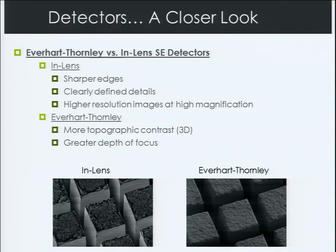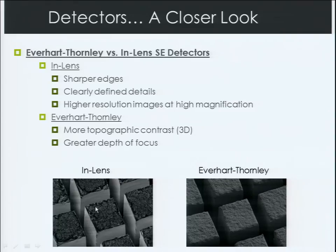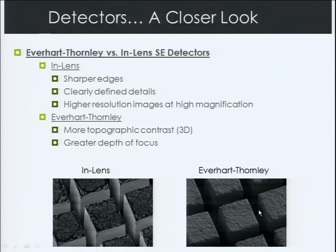Now let's compare two types of secondary electron detectors. On the left is an image taken with an in-lens secondary electron detector; on the right is one taken with an out-of-lens secondary electron detector, an Everhart-Thornley detector. On the left, we see sharper edges, more clearly defined details, and overall a higher resolution image at this higher magnification. However, on the right we actually get more topographic contrast — it looks more 3D with better shading. We also have a greater depth of focus, so we can have more of the image's highs and lows in a larger field all in focus at the same time. Depending upon what you need, you have to choose your detectors appropriately.